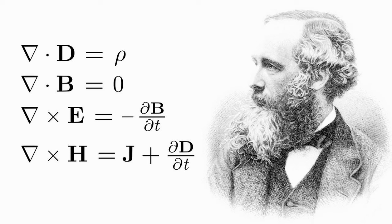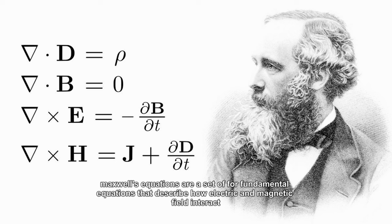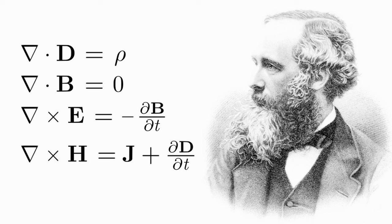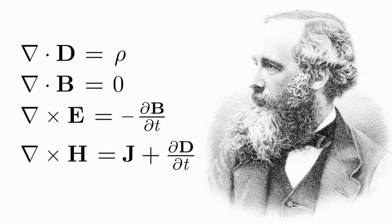Maxwell's equations are a set of four fundamental equations that describe how electric and magnetic fields interact and propagate through space. These equations were developed by James Clerk Maxwell in the 19th century and are essential in the field of electromagnetism. The development of these equations was not the work of a single individual but rather a culmination of the contributions of several scientists.